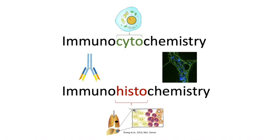Hello everyone. In this video we will discuss the basic principles of immunocytochemistry. Immunocytochemistry, or ICC, is a powerful method to visualize the localization of a protein of interest. As its name suggests, the technique involves immunology by the use of antibodies, cytology which is a study of cells, and chemistry which refers to the chemical reactions needed to visualize the protein.